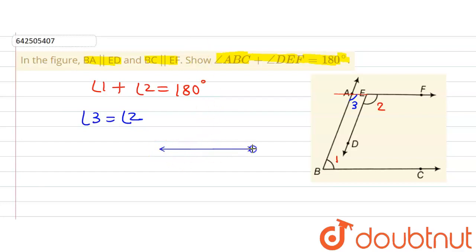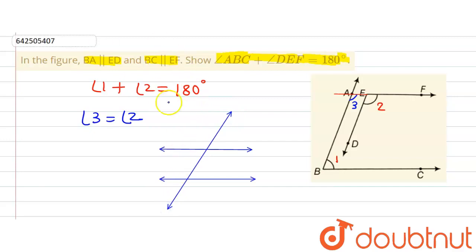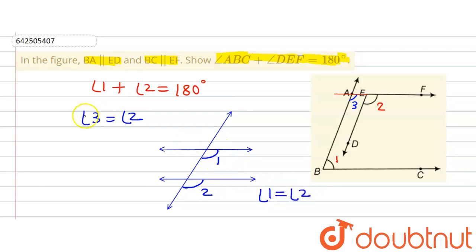When two parallel lines are intersected by a transversal, the pair of corresponding angles formed are equal. For example, if we call one angle as angle 1 and the other as angle 2, they are corresponding angles and will be equal when the two lines are parallel. So in this case, angle 2 equals angle 3 because they are corresponding angles.